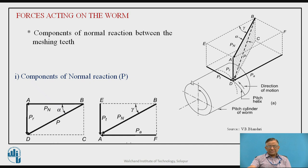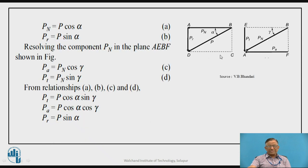The second plane considered is the top plane AEBF. In this plane, PN is further resolved: PA = PN cos γ and PT = PN sin γ, where γ is the lead angle. This allows us to analyze the tangential force PT parallel to AE and the axial force PA acting along the axis.